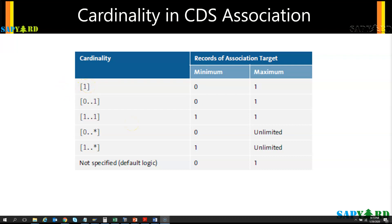Another rule is that the minimum cannot be a star, and the maximum cannot be zero. A notation like star..1 or star..0 can never happen, and the maximum can never be zero.